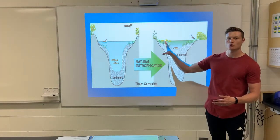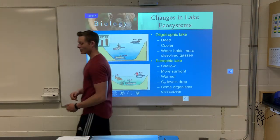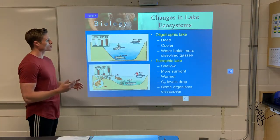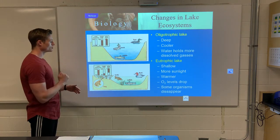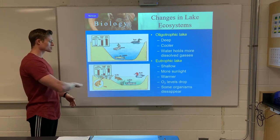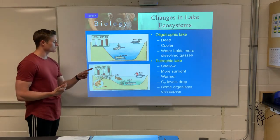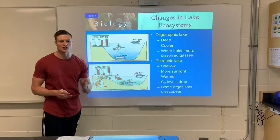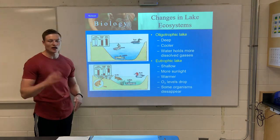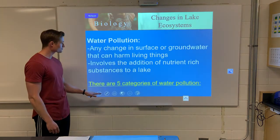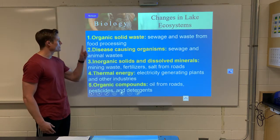Over time this process takes a once deep, cold lake into a shallow, warm lake. An oligotrophic lake is deep and cold, holding lots of dissolved oxygen — you might find trout, catfish, and loons there. A eutrophic lake has much less dissolved oxygen, more sunlight, and warmer temperatures, supporting things like frogs, turtles, and ducks. Catfish can survive in both. We notice how species change as the lake ecosystem changes.